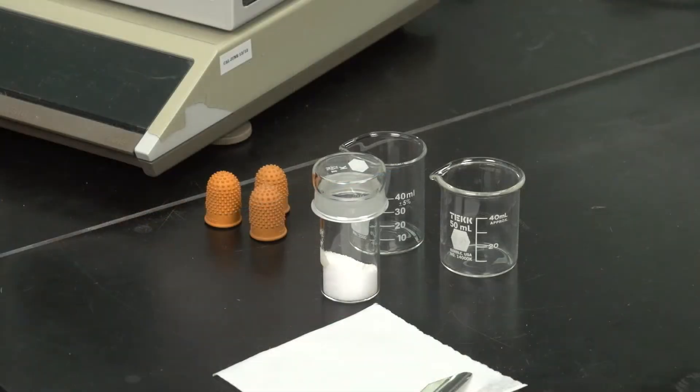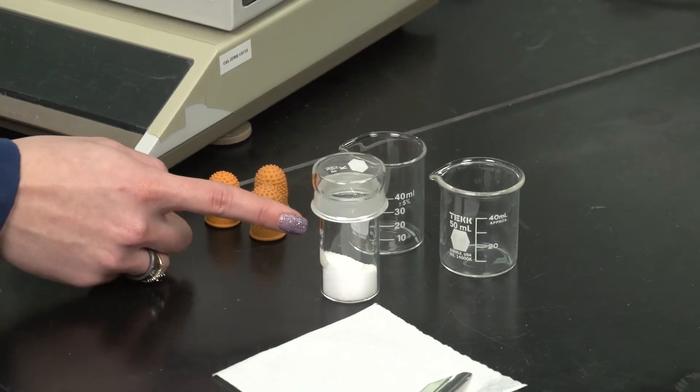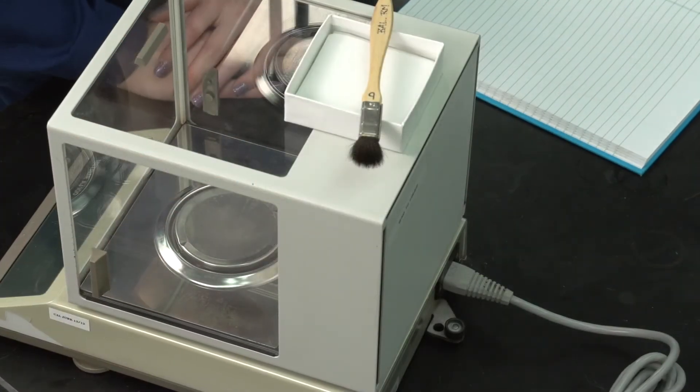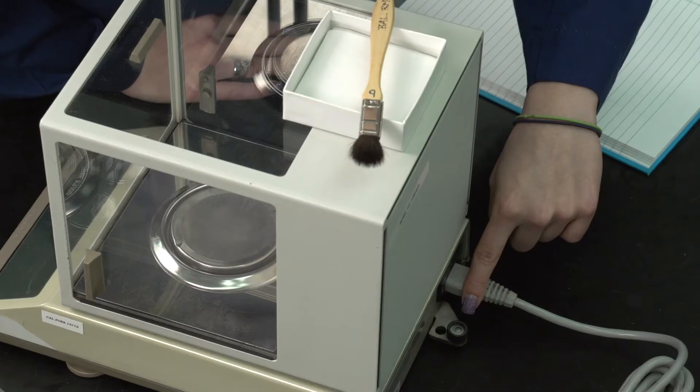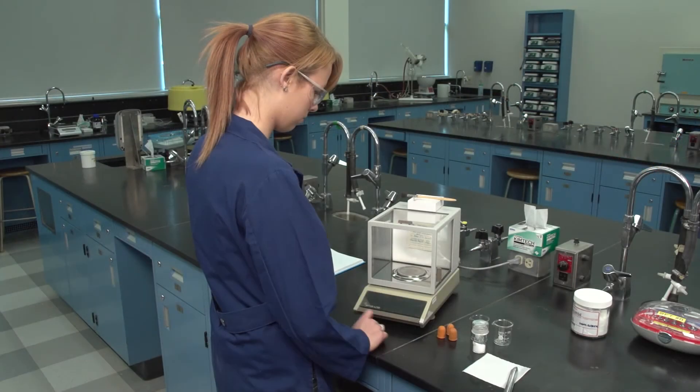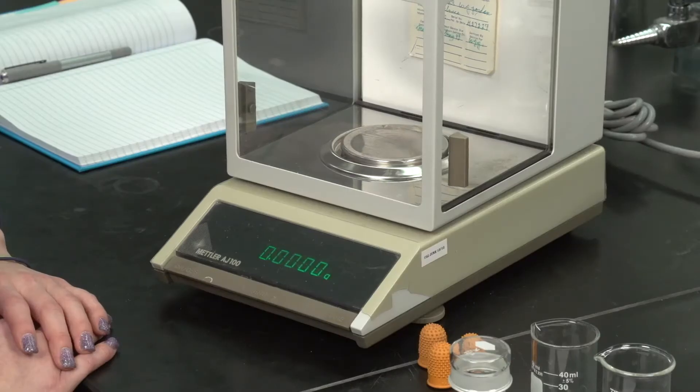Obtain an amount of material that is slightly greater than the mass of sample required. The sample should be placed into a clean, dry, weighing bottle with lid. Prior to use, ensure that the analytical balance is both clean and level. Turn on the balance. Press the tare bar and wait until a stable zero reading is obtained.